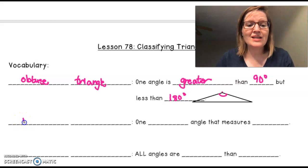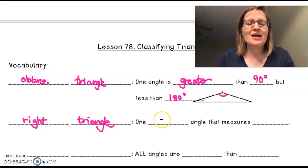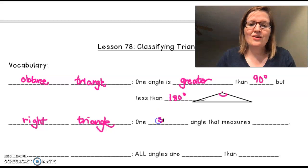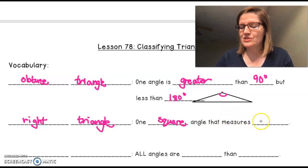We see it a lot. It is a right triangle. And this means that one square angle that measures 90 degrees.